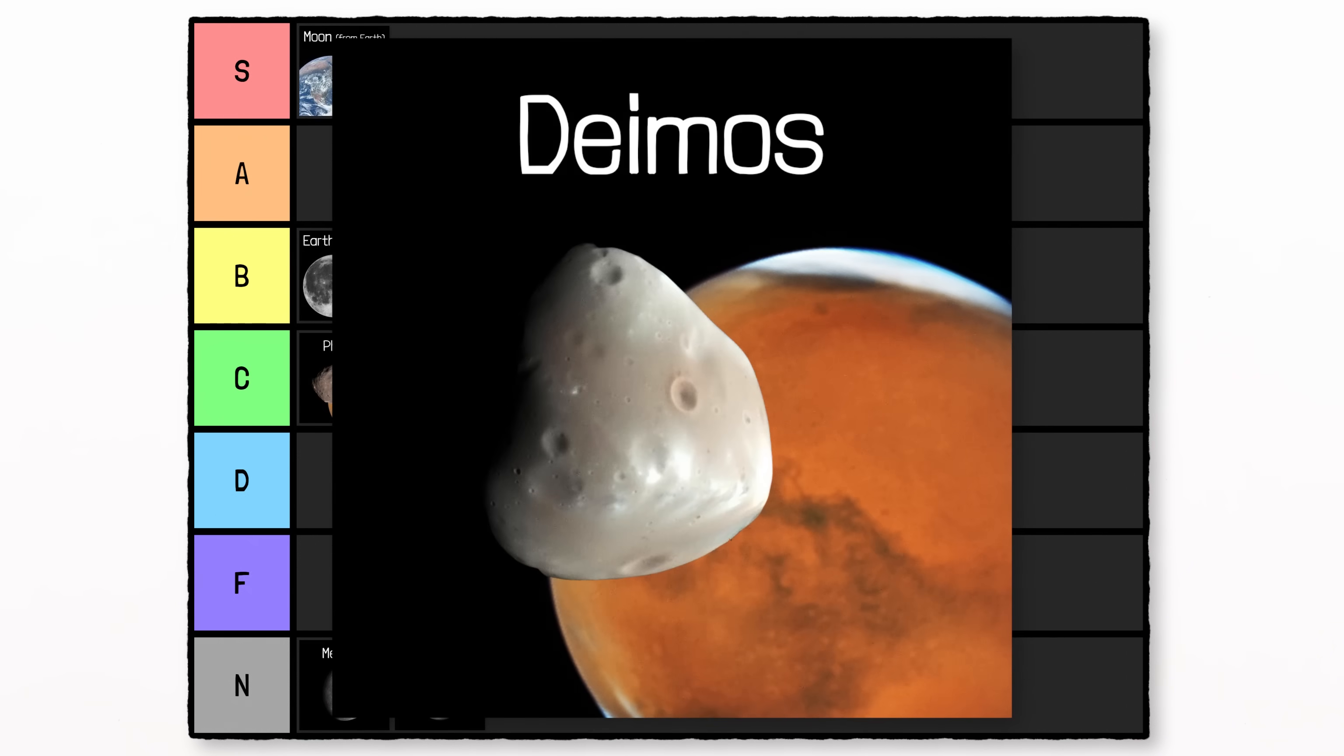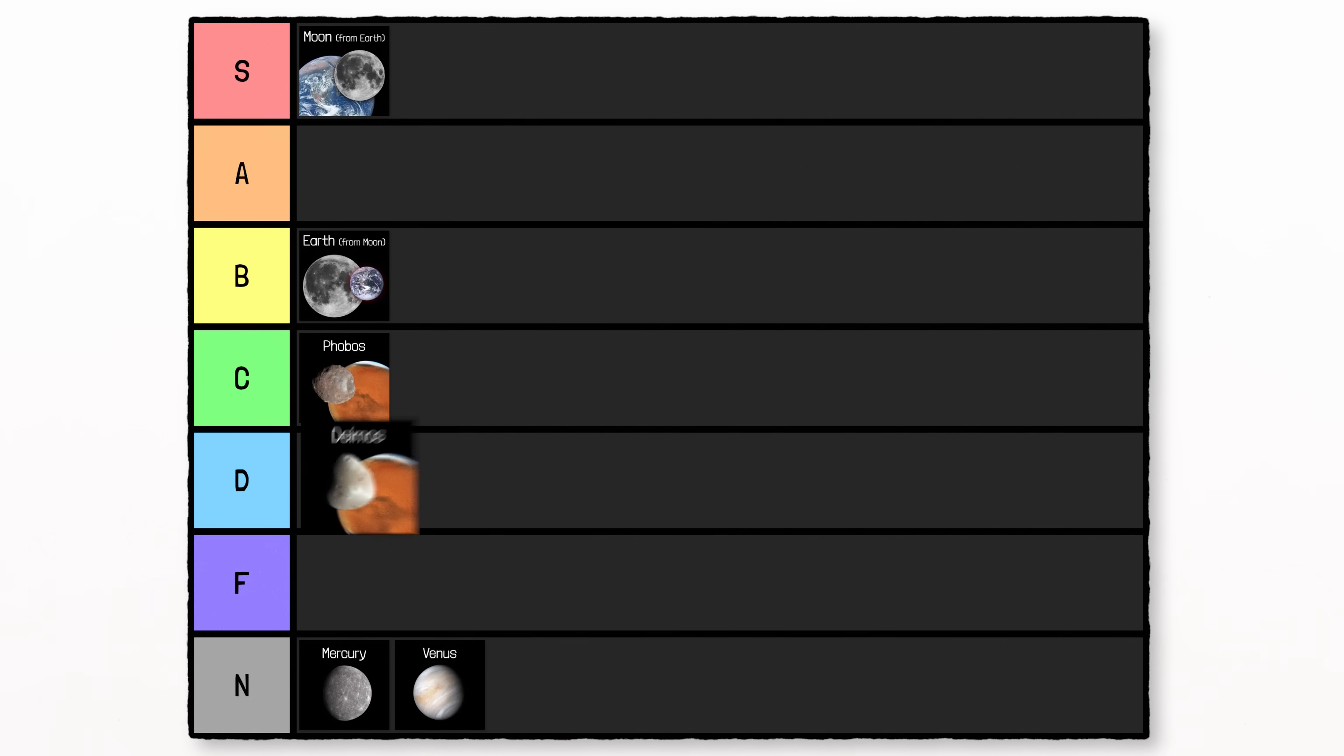The other moon, Deimos, is too far away to cover more than about 1% of the sun, and appears small enough you'd just barely even be able to see it with 20-20 vision through solar glasses. D-tier.